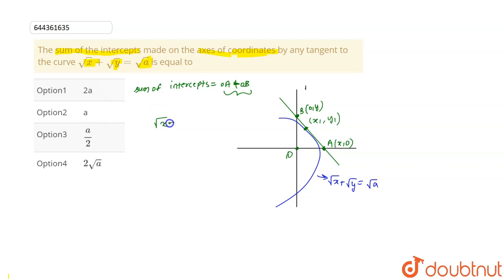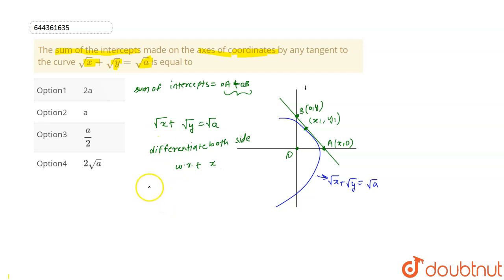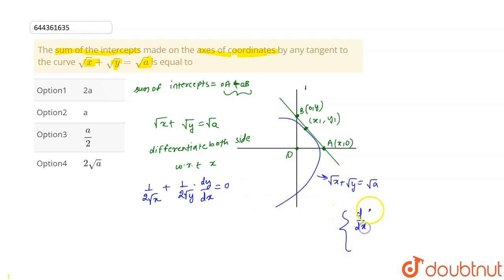Our curve is given by √x + √y = √a. Now differentiating both sides with respect to x: the differentiation of √x with respect to x is 1/(2√x), and differentiation of √y is 1/(2√y) · dy/dx, and differentiation of √a is zero. We used the formula that differentiation of xⁿ is n·x^(n-1).